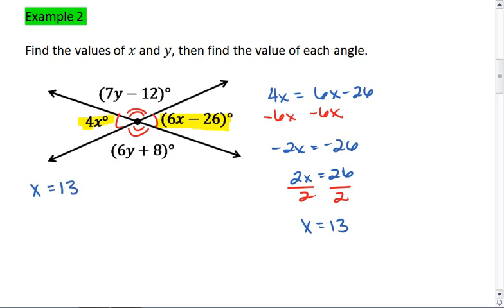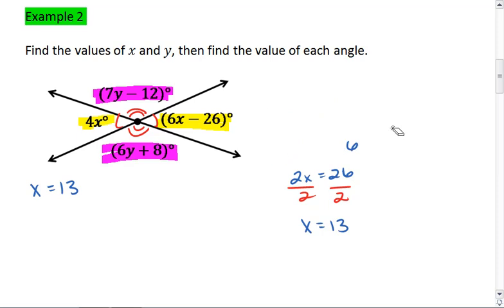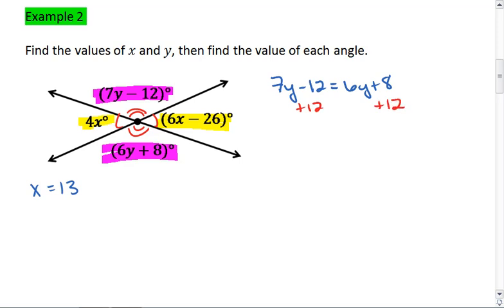Now I want to solve for my y's. Again, we have vertical angles, which means I can set 7y minus 12 equal to 6y plus 8. I can add 12 to both sides, giving me 7y equals 6y plus 20. Subtract 6y from both sides. I get y equals 20.